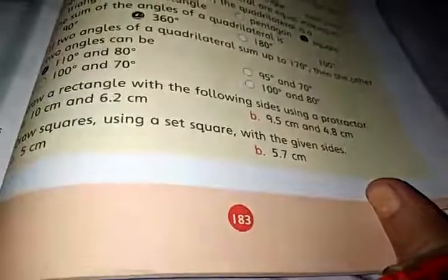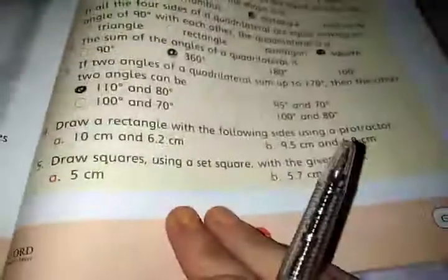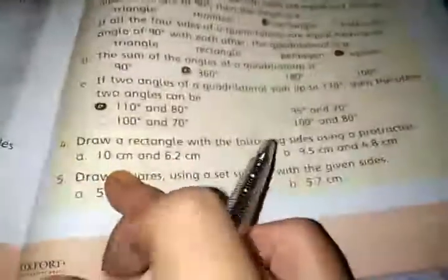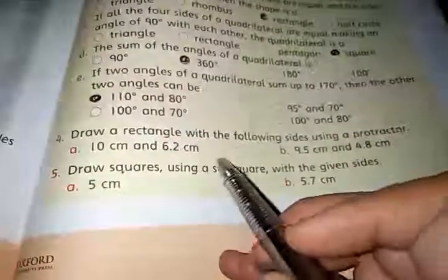Assalamu alaikum students, how are you all? Hope you are all fine. Today we are going to start question number four of exercise 70. Question number four is draw a rectangle with the folding sides using a protector.